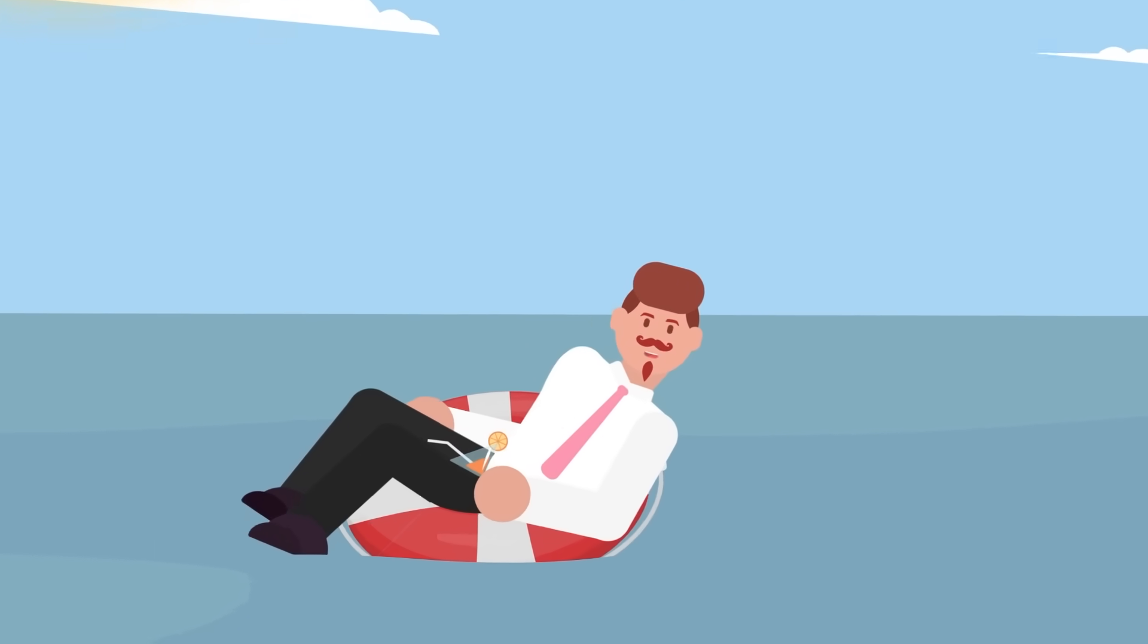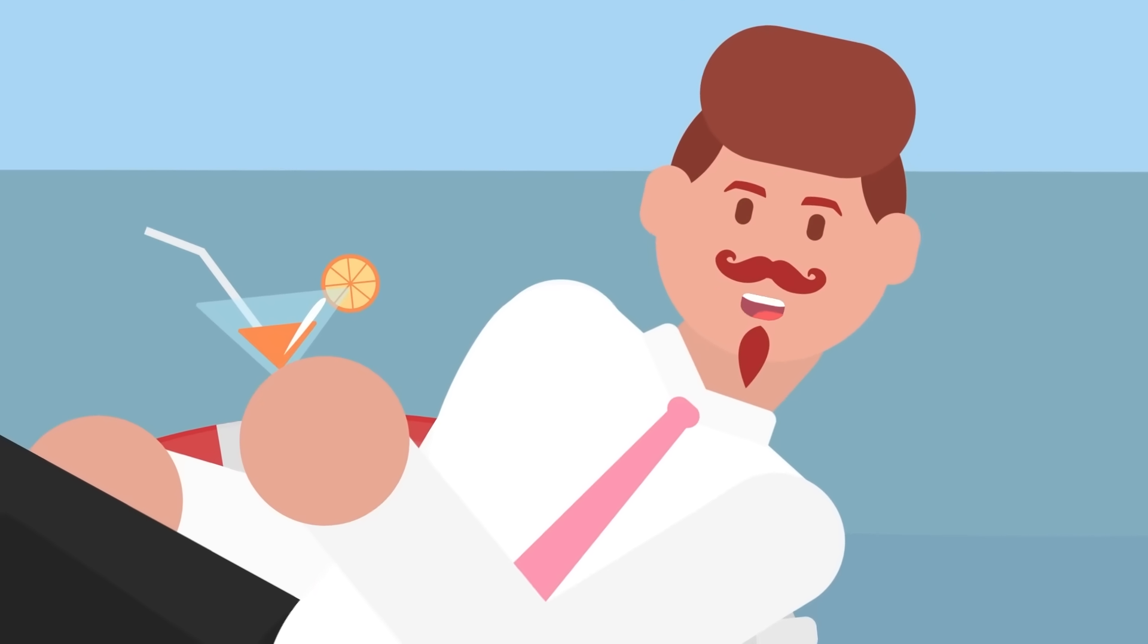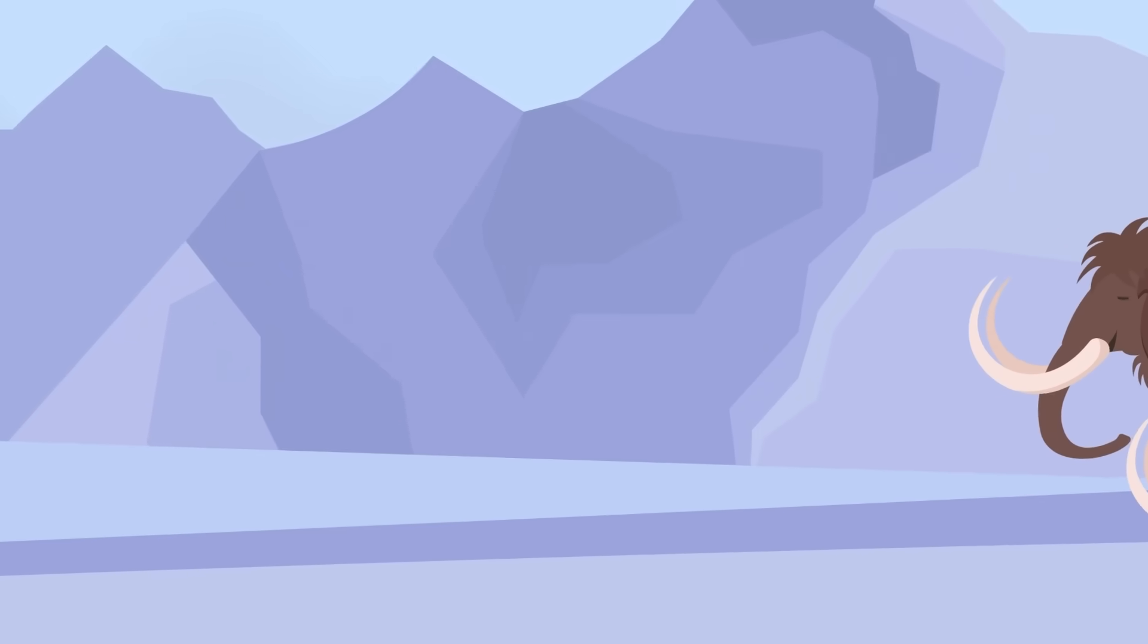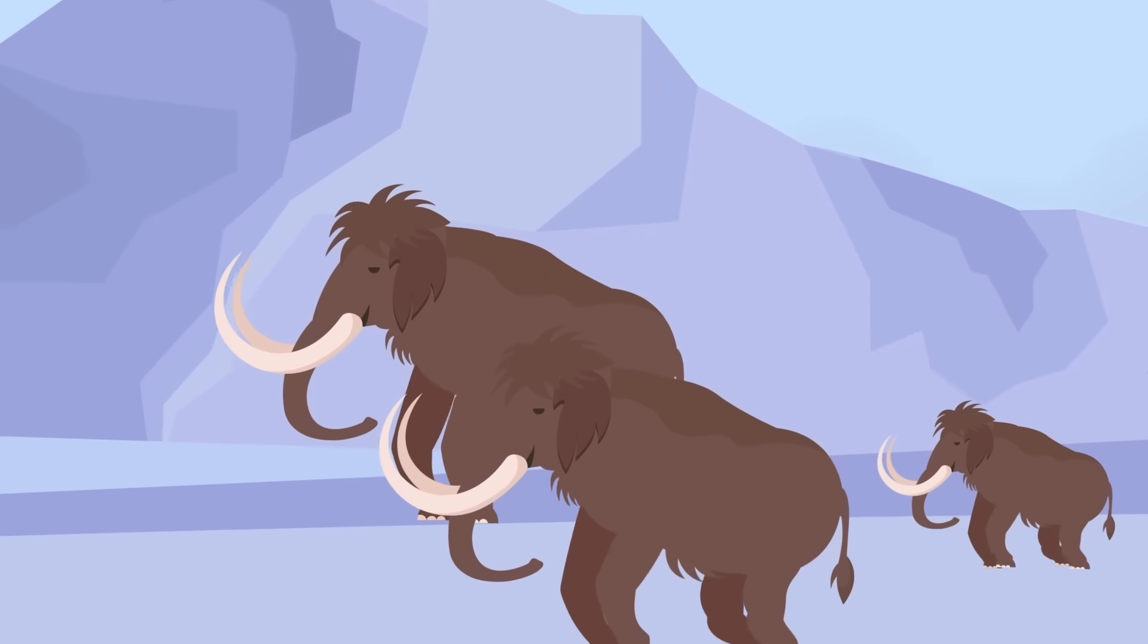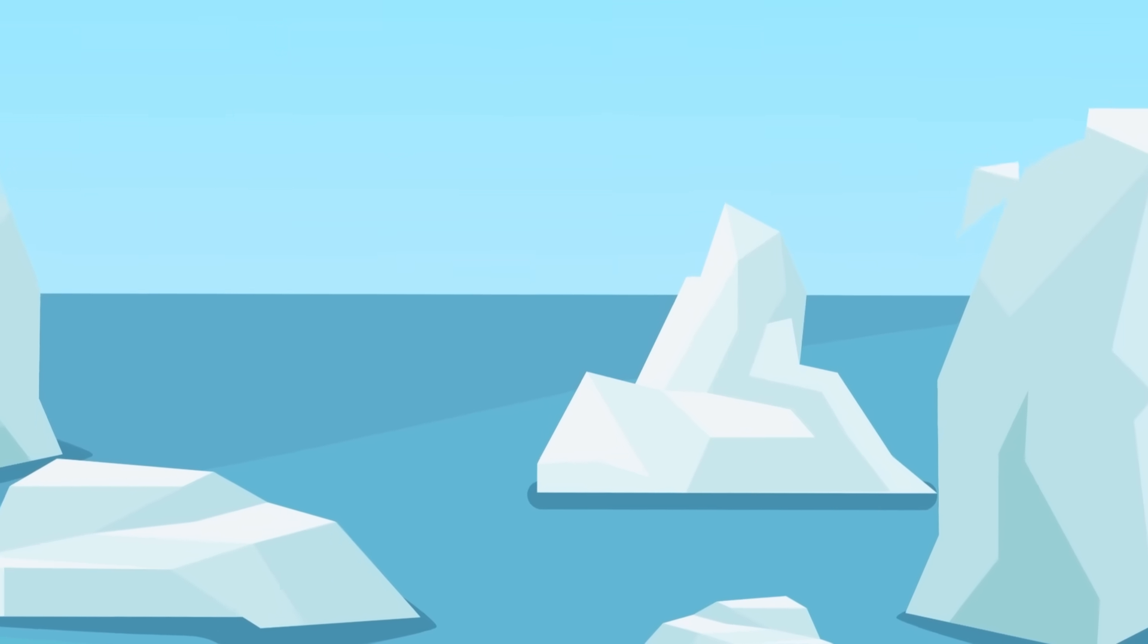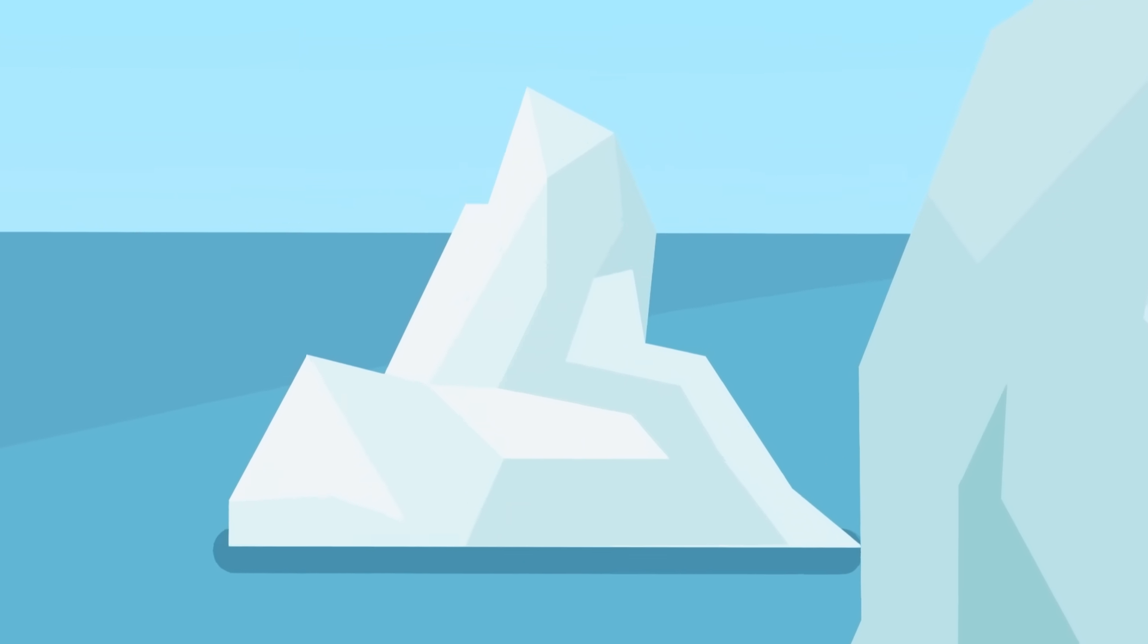But back on Earth, there's another reason people are concerned about the question of where Earth's water came from. Earth's climate changed a lot at the beginning of its existence, and it may be changing again now. Temperature records are broken every year, and the poles are melting, and water levels are rising.